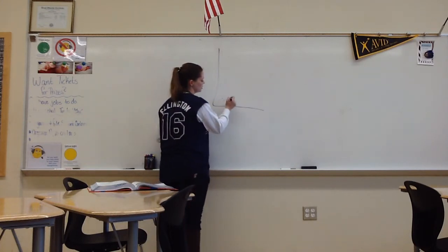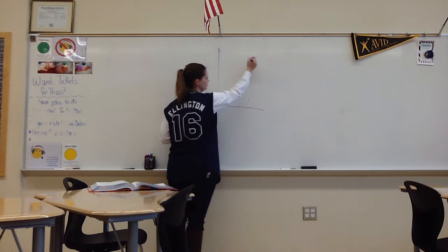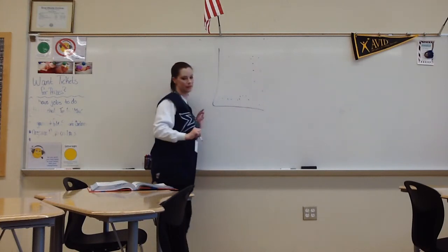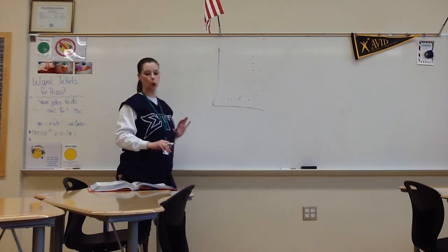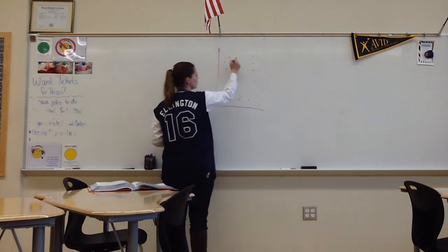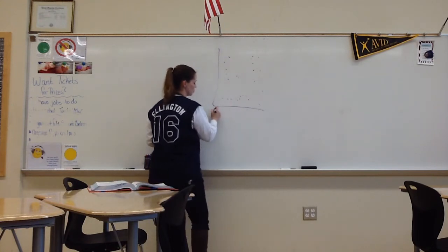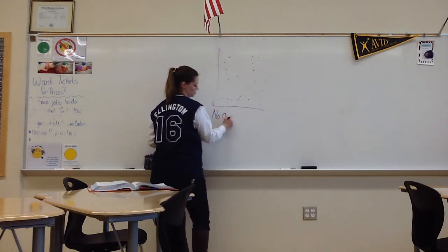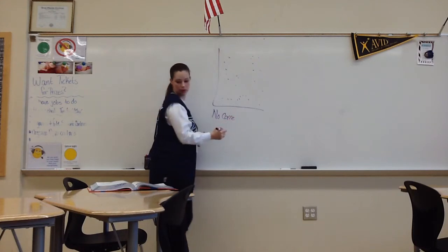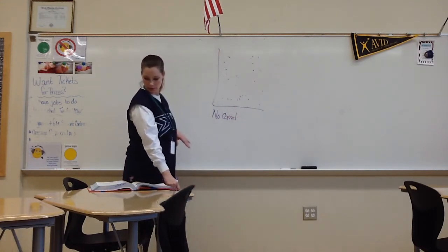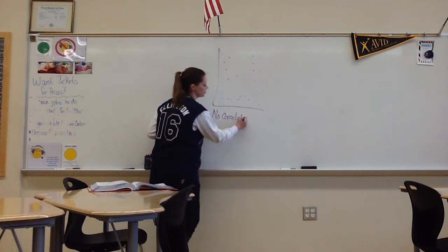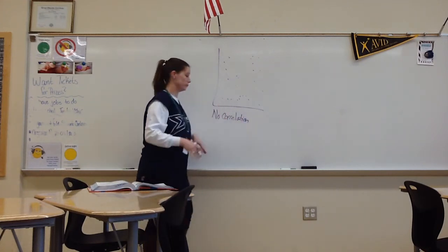Say our dots are like that. This would have no correlation because the dots are all over the place. There could be dots over here, dots over here. It means no correlation. There's no rhyme or reason or relationship between, I can't spell today, correlation between the dots. They're just there.